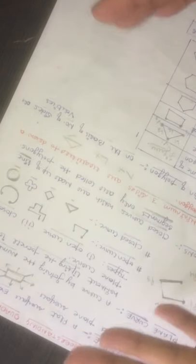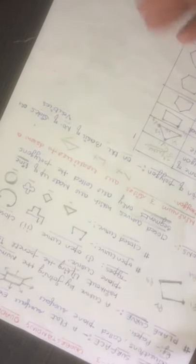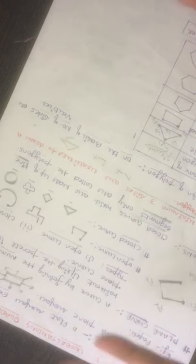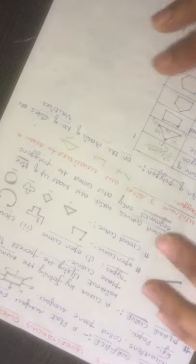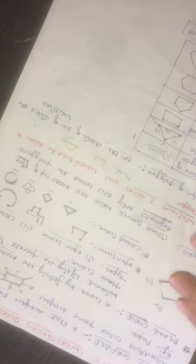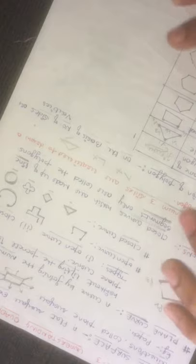Suppose you have a paper - this is the paper. You can extend this paper, like a rubber, in this direction, in this direction, and in this direction. You can extend this paper in any direction if it is stretchable. That time, it is a plane surface. Extend means to increase in mathematical language. So, it is a plane surface.